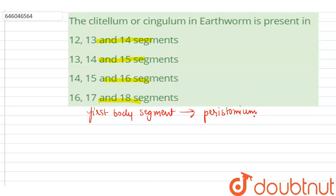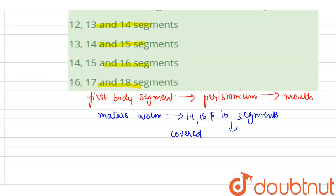Peristomium, or the buccal segment, which contains the mouth. In a mature worm, 14, 15, and 16 segments are covered by a prominent dark band.